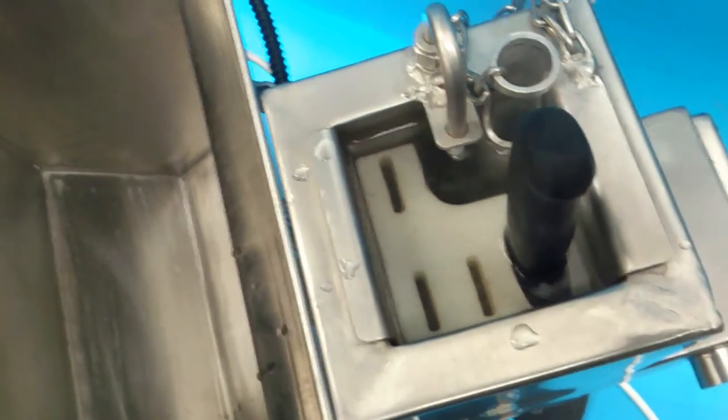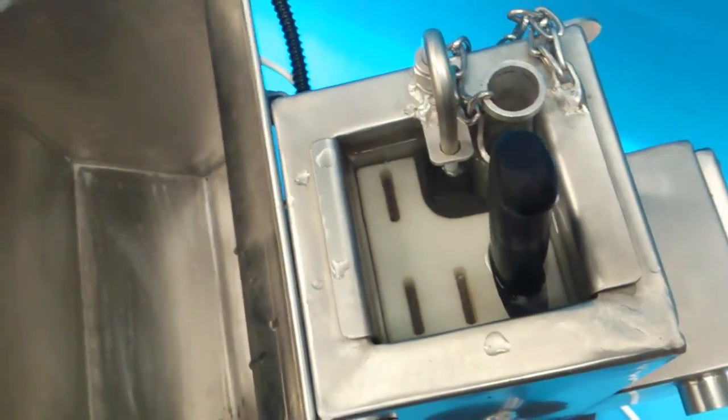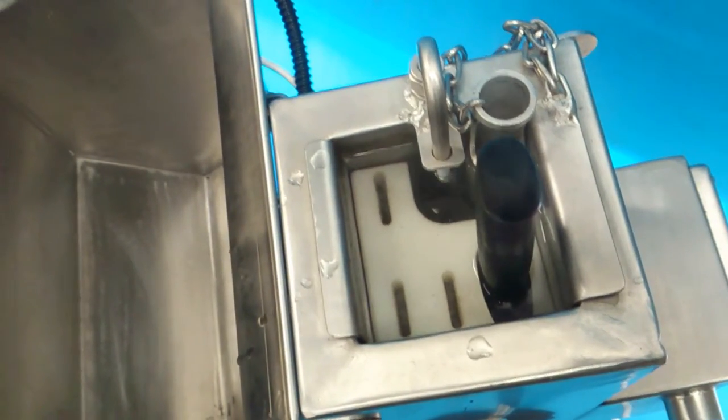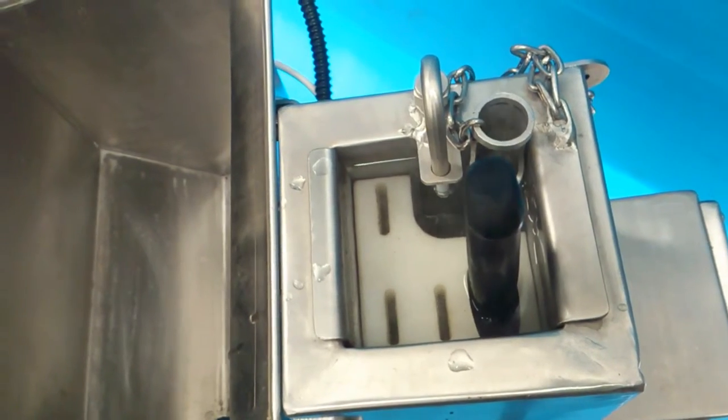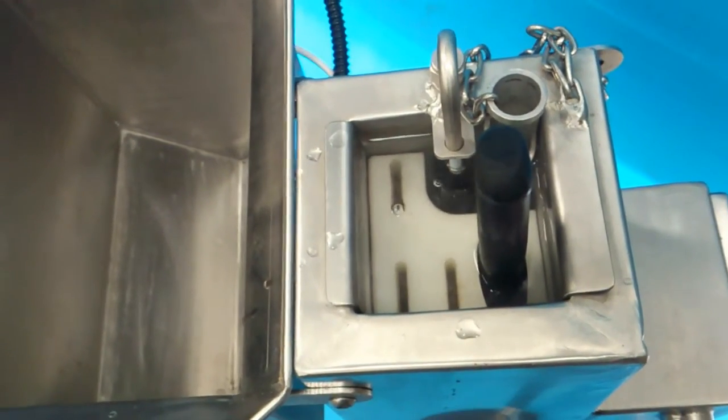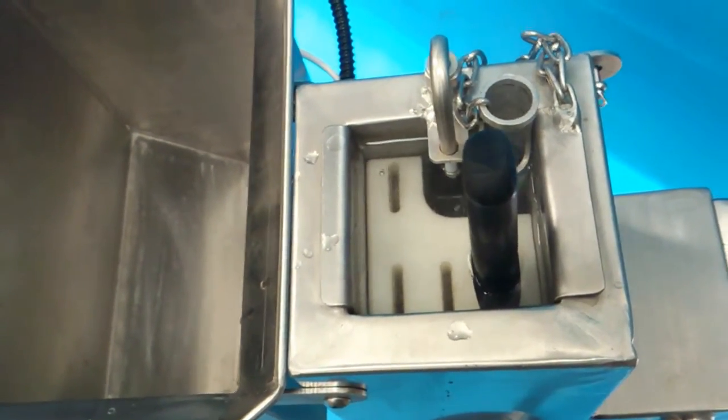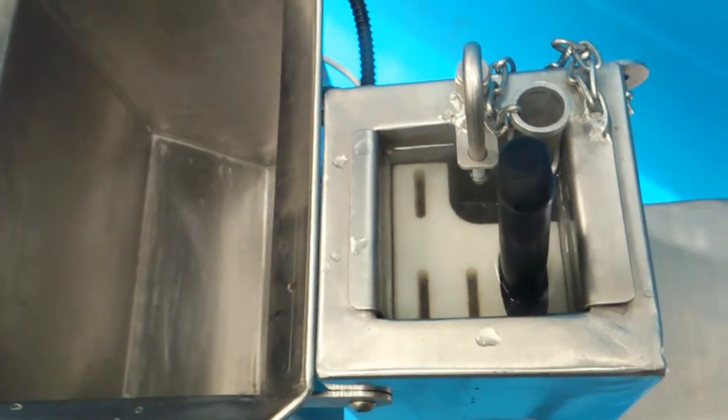This Delron basket is capable of withstanding temperatures of over 120 degrees centigrade, and of course the Teflon basket also protects the knives from losing their edge.